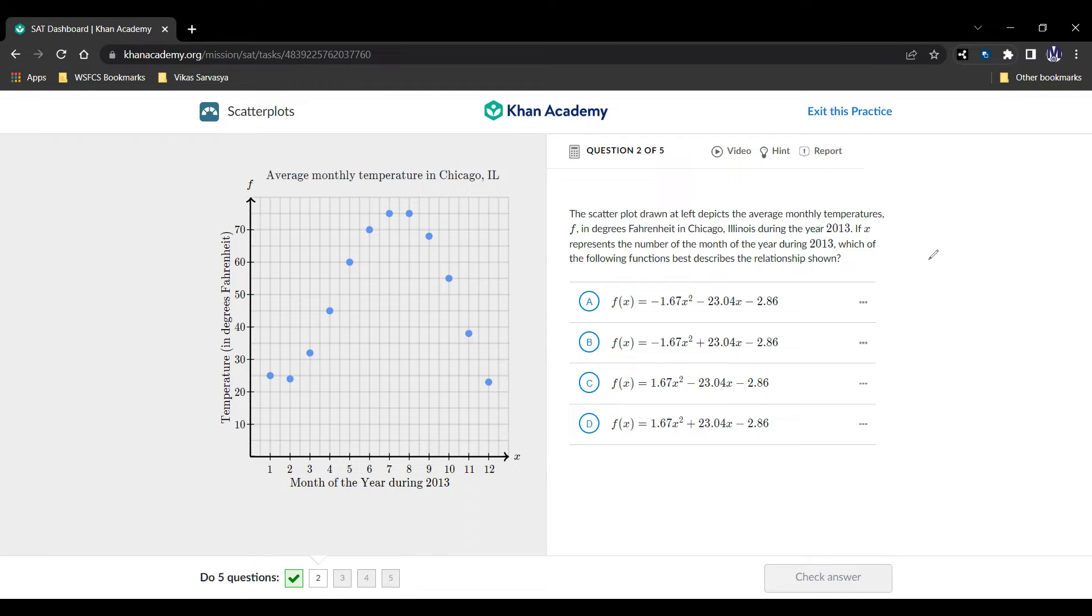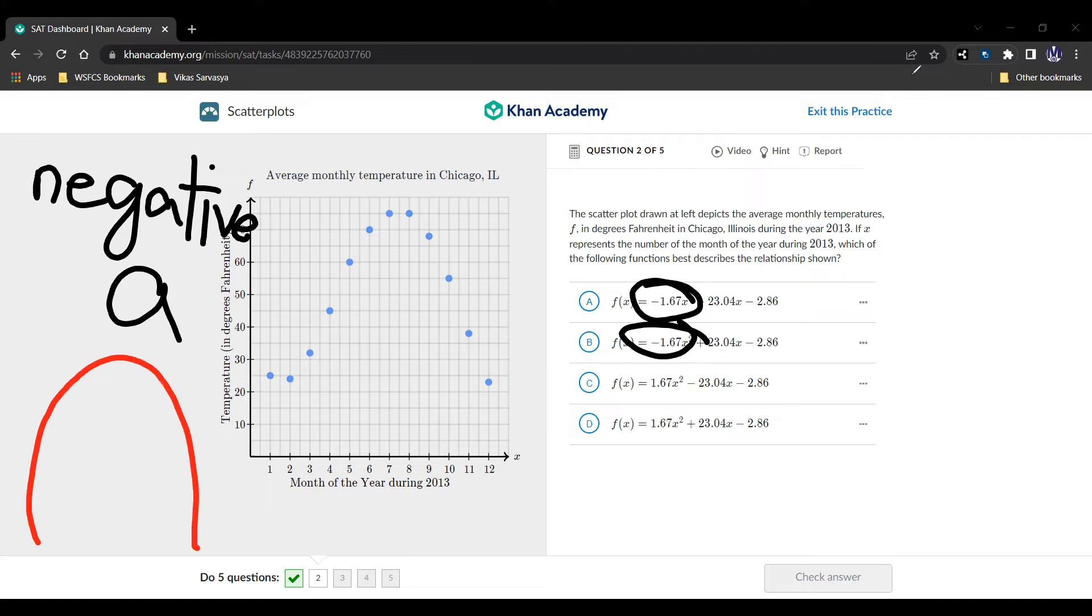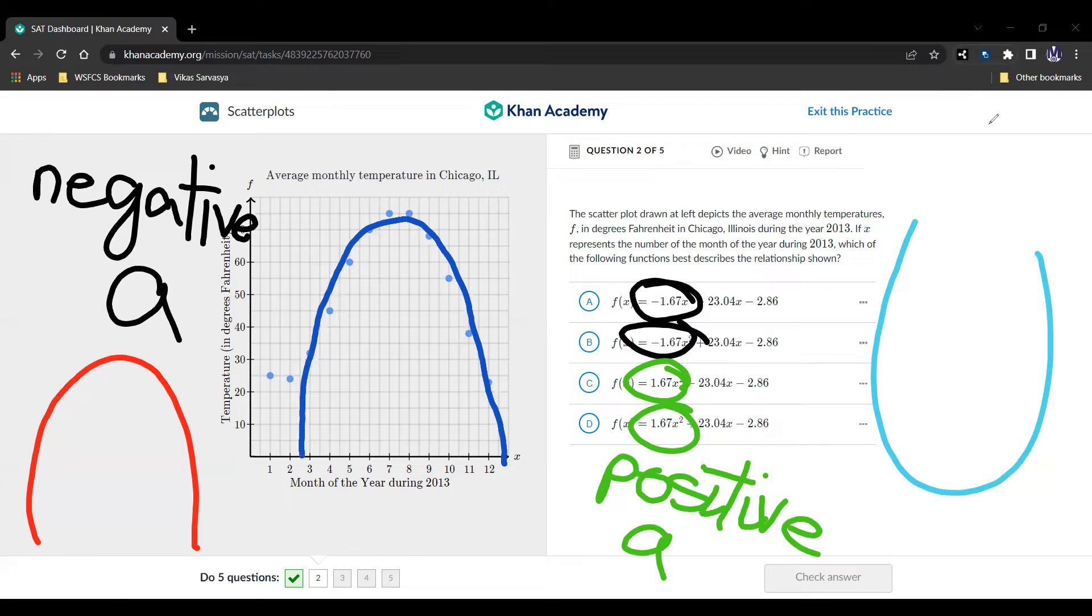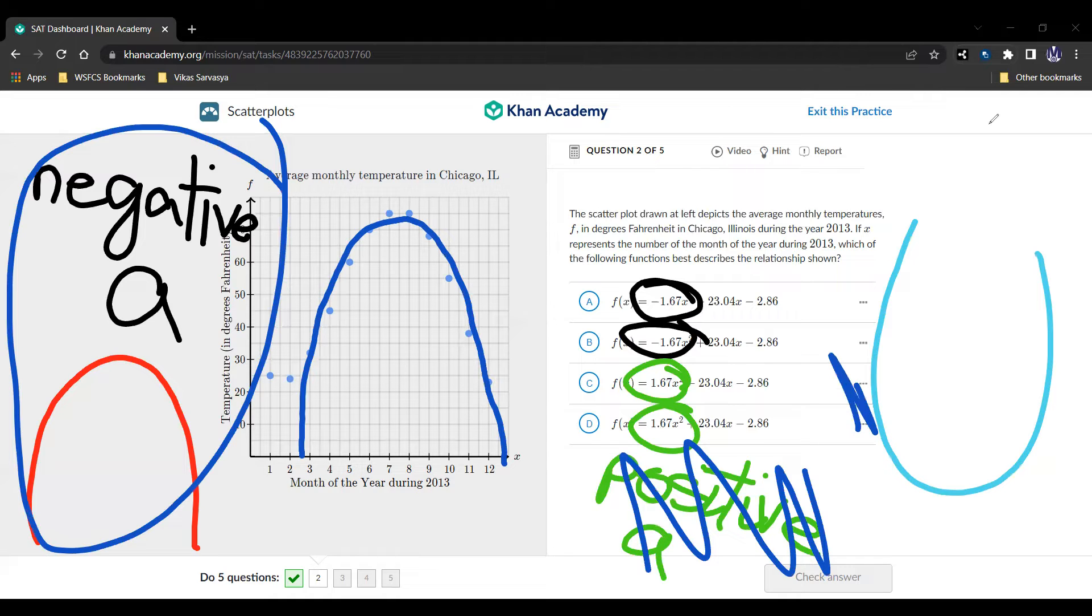And we're given a couple quadratics, and we're trying to see which one works. Well, let's see what we can do here. So these two functions have a negative a, which means what? It means that they open down, like that. Whereas these two functions have a positive a, which means that they are going to open up. Now this, as you can see here, in this graph, it seems to open down, like that. Which means that this is going to be the correct one, so these aren't going to work, and these are going to be incorrect.